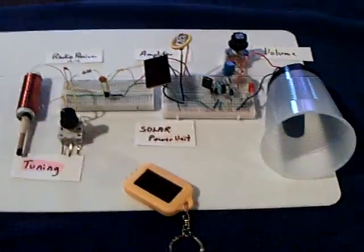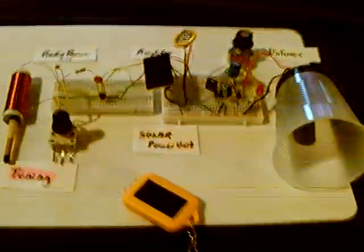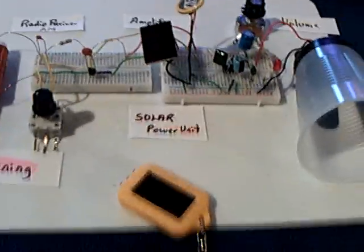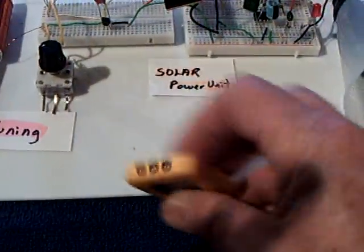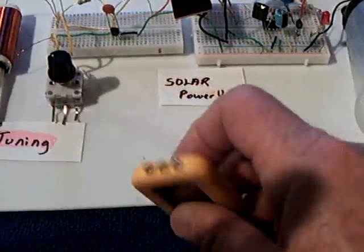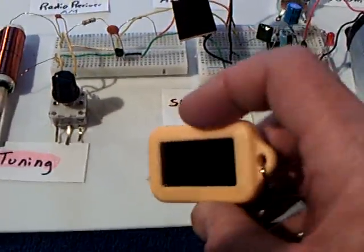I took this one step further and made a little solar-powered AM radio using the guts out of one of these lights. You can get them on eBay - it's a little LED light with a solar panel.